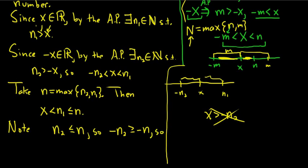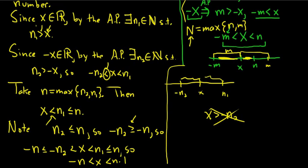So rewriting this, this would mean that negative n is less than or equal to negative n2, which is less than, look up here, less than x, which is less than, well it worked out perfectly, n1, which is less than or equal to n. So in particular this means that negative n is less than x, which is less than n. And that completes the proof.